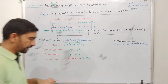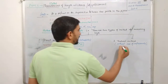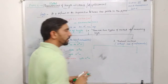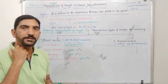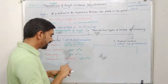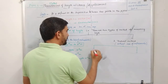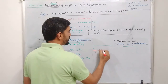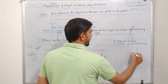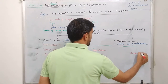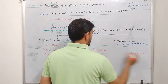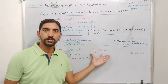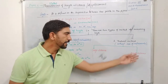Now let's go to the indirect method. The indirect method is also divided into two categories: one for measuring large distances and the other for measuring small distances.